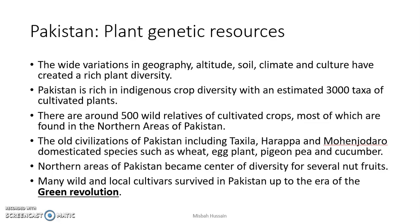Pakistan has wide variations in geography, altitude, temperature, and culture, making its plant diversity very rich. It is estimated that there are approximately 500 wild relatives of cultivated crops, most found in the northern areas. Pakistan also has ancient civilizations — Taxila, Harappa, and Mohenjo-daro — with evidence of domestication of wheat, eggplant, pigeon pea, and cucumber. The northern areas are also rich in nut fruit biodiversity.